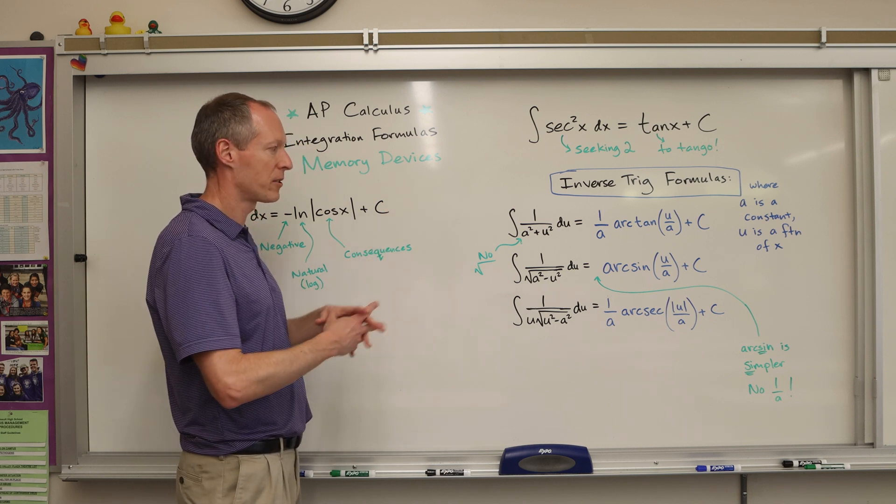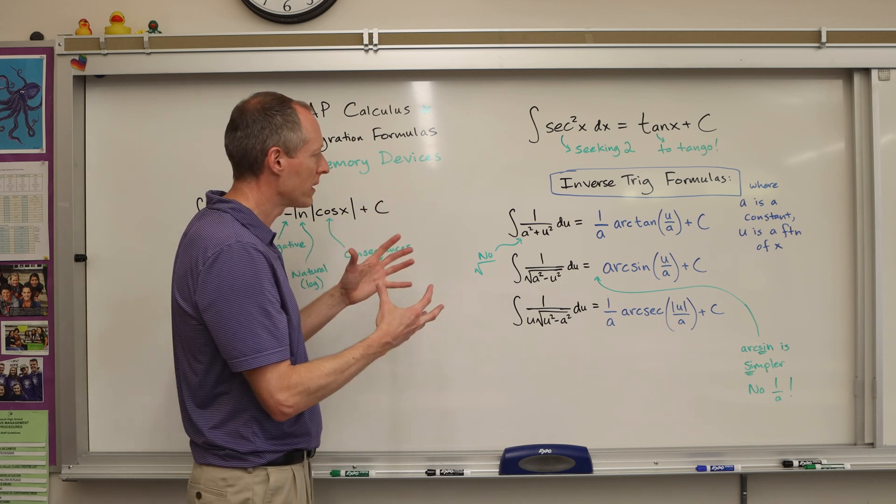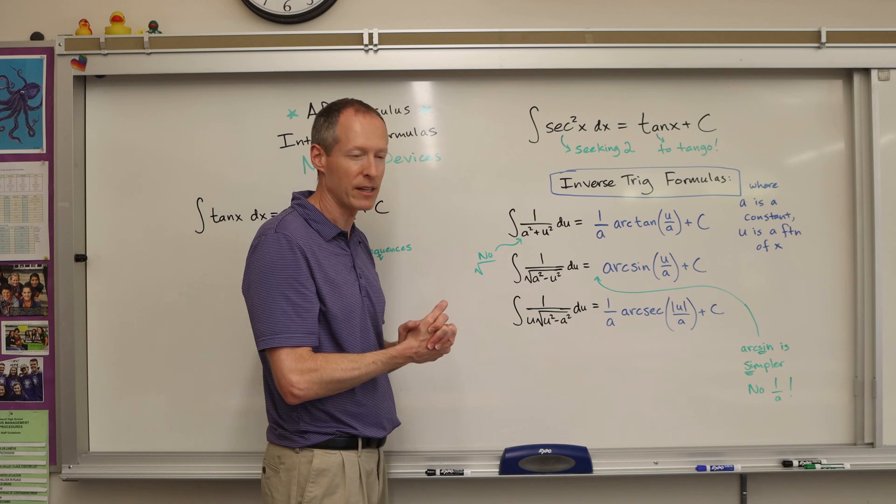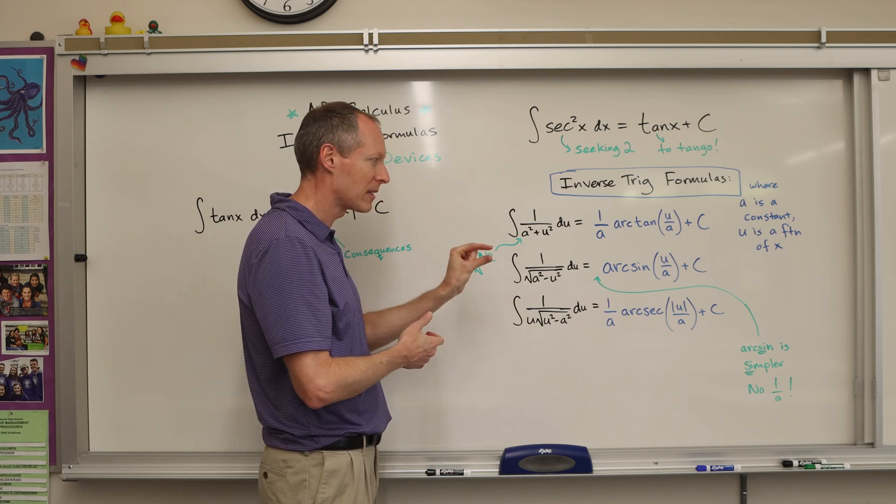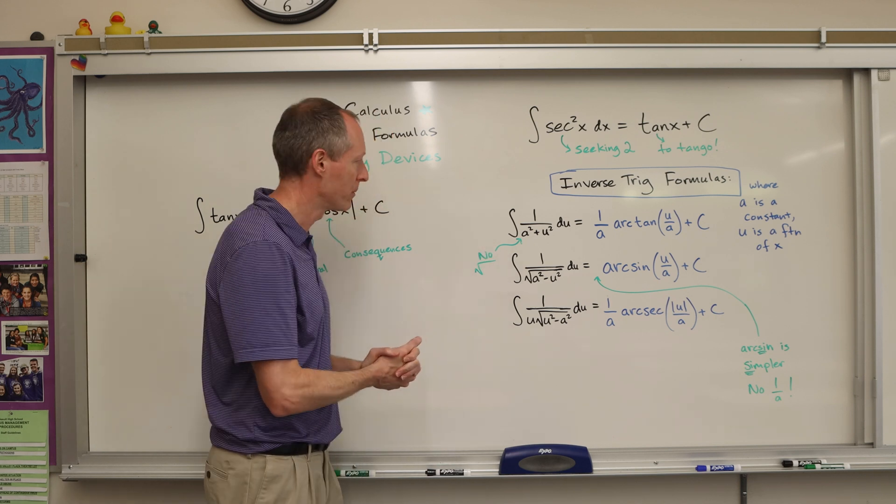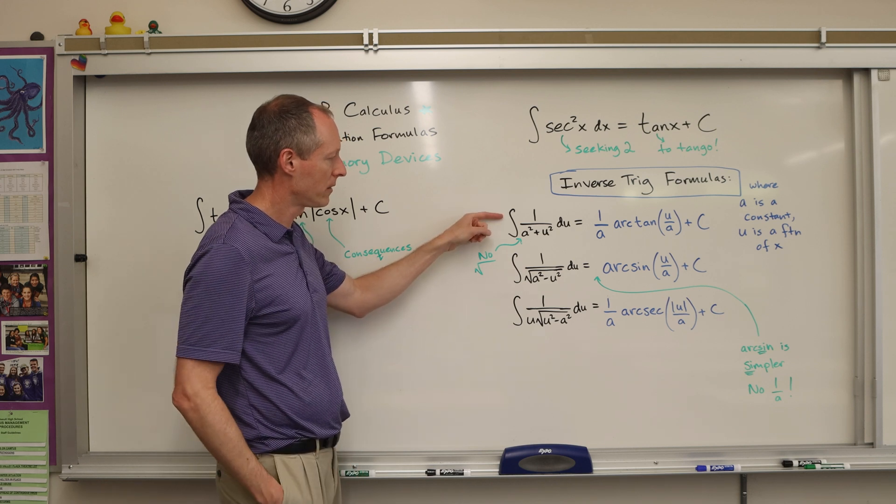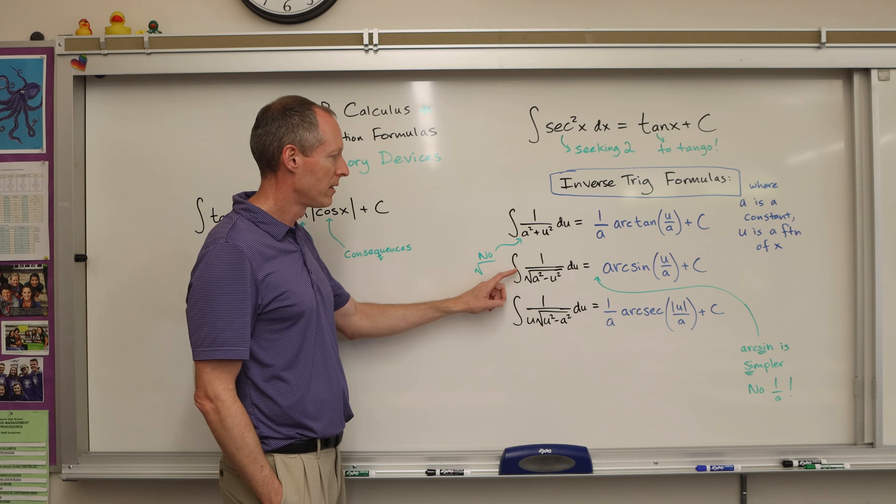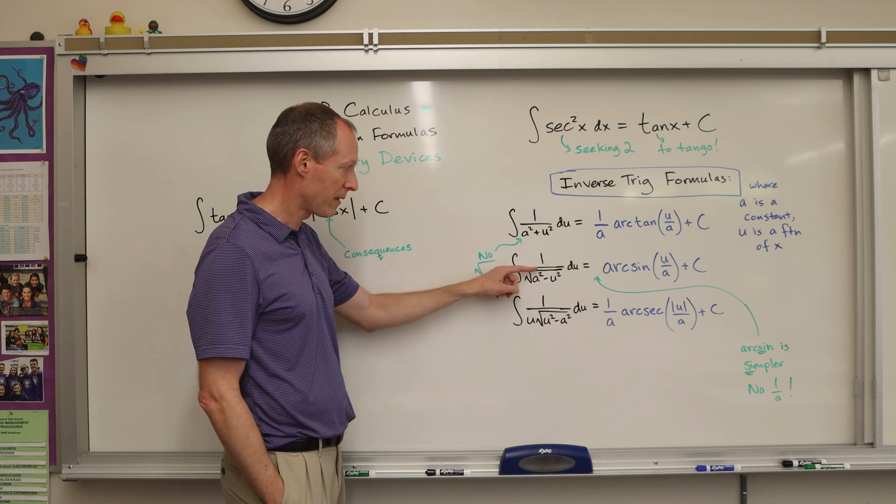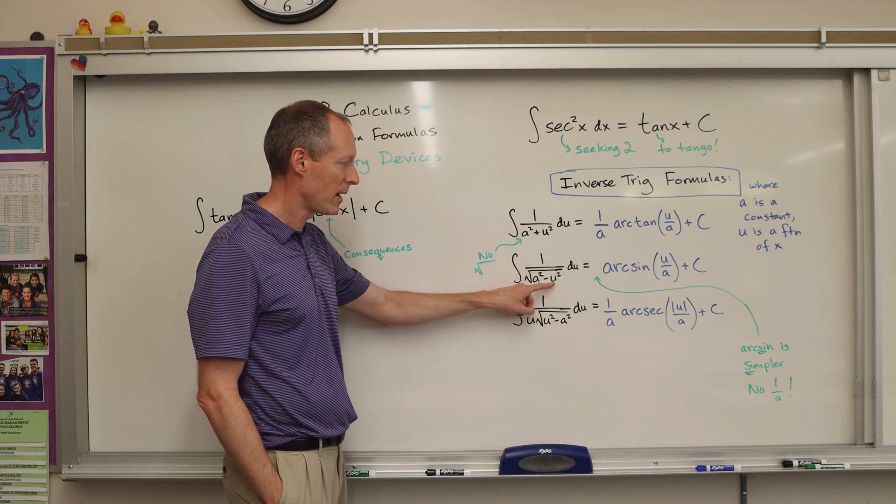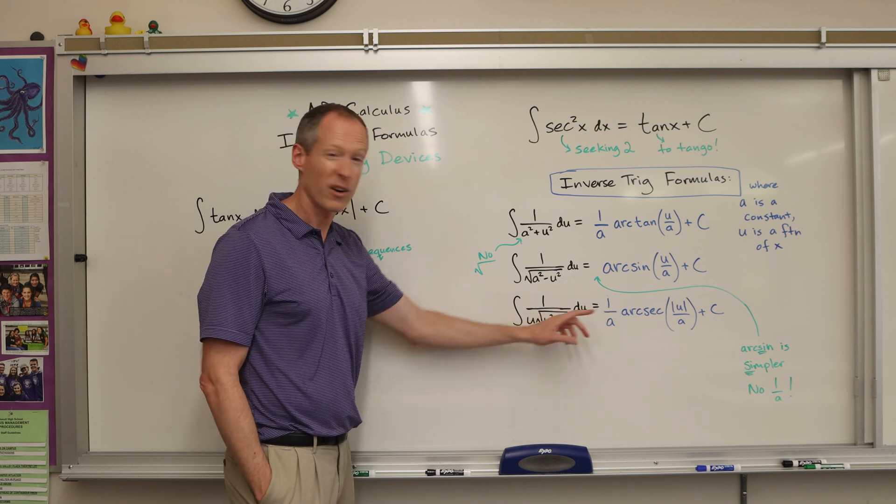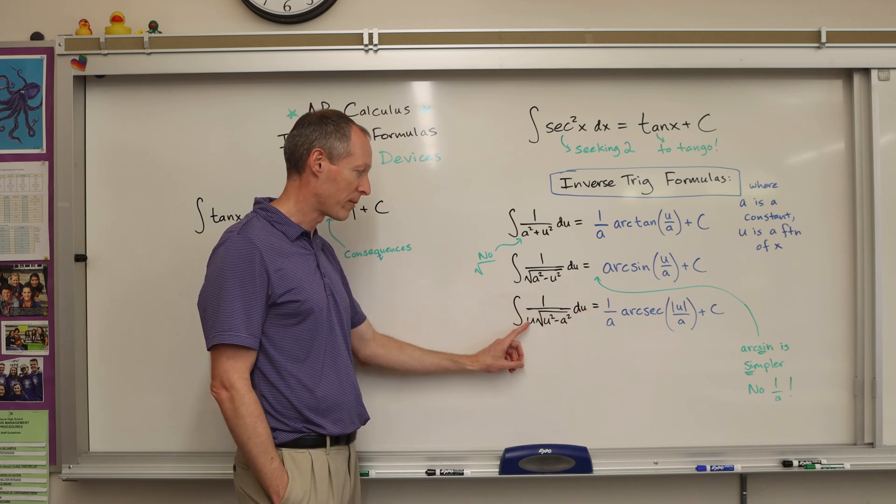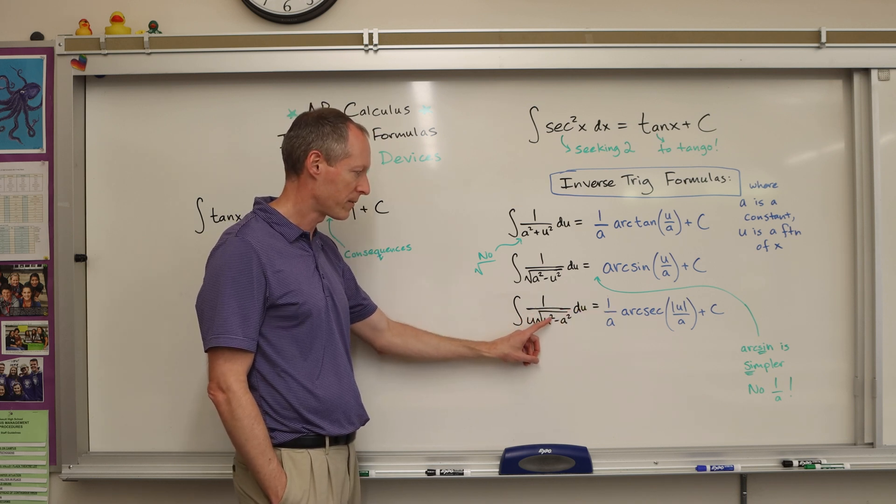Now the next three, these are, you usually learn these as a unit, and they can be tricky because there's so many similarities but little slight differences. So here's what I'm going to help you with. When you have the integral of these three, notice the first one does not have a square root. Notice the arc sine one does have a square root, and it's a squared minus u squared.